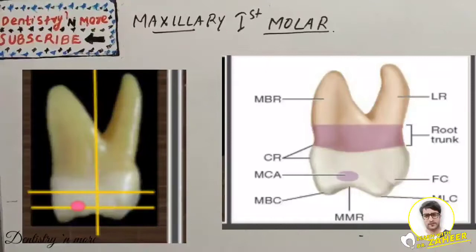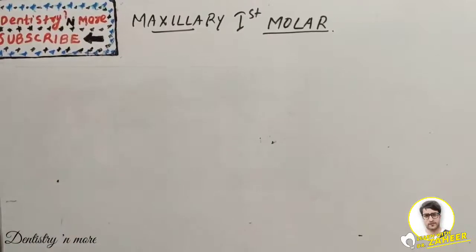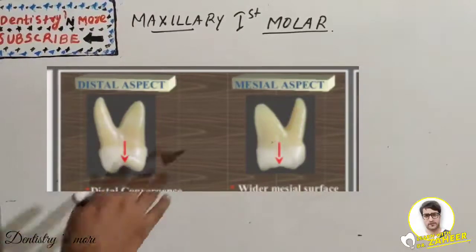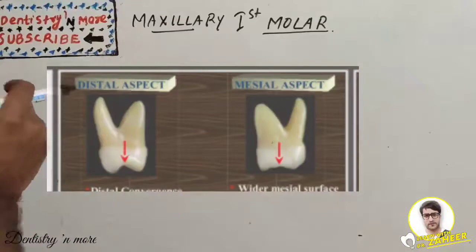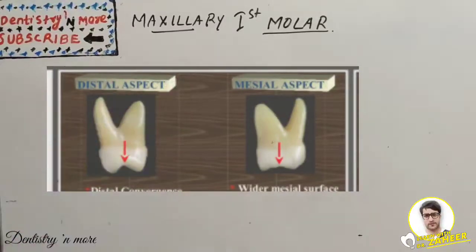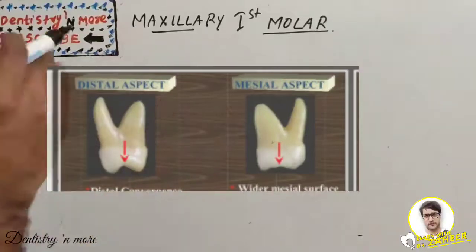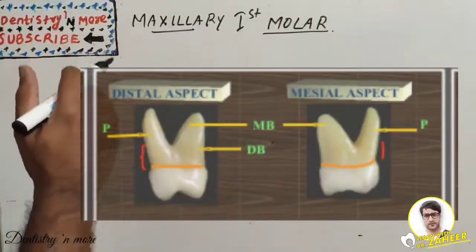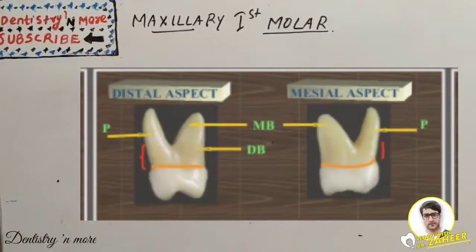On the distal aspect compared to the mesial: there is distal convergence, whereas the mesial surface is wider. The distal surface is convex except for a small concavity at the cervical one-third. The mesial surface is flat. The distal marginal ridge is more curved cervically; the mesial marginal ridge is less curved. The root trunk is five millimeters on the distal side versus three millimeters on the mesial. From the distal aspect, all three roots are visible, whereas from the mesial only two are seen.